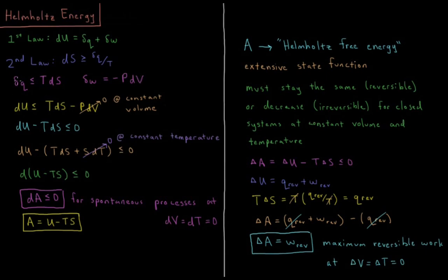Putting those two together: du = dq + dw, where dq ≤ T ds and dw = −p dV. So the change in internal energy du is less than or equal to T ds minus p dV. Now if we consider that this process occurs at constant volume, then dV = 0, and du is less than or equal to T ds, or equivalently du minus T ds is less than or equal to zero.